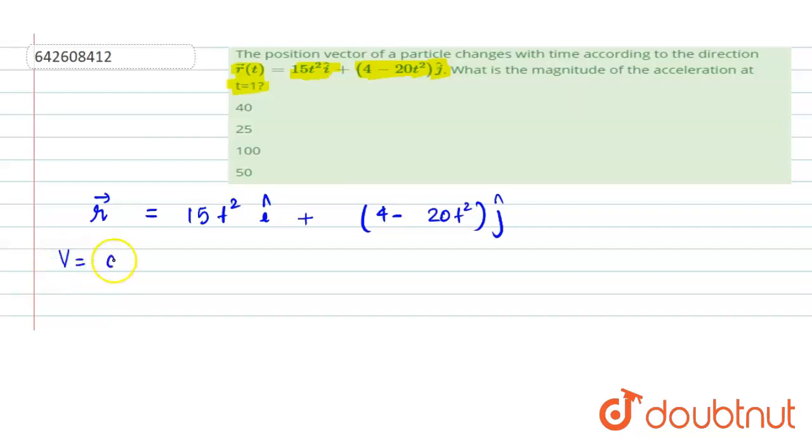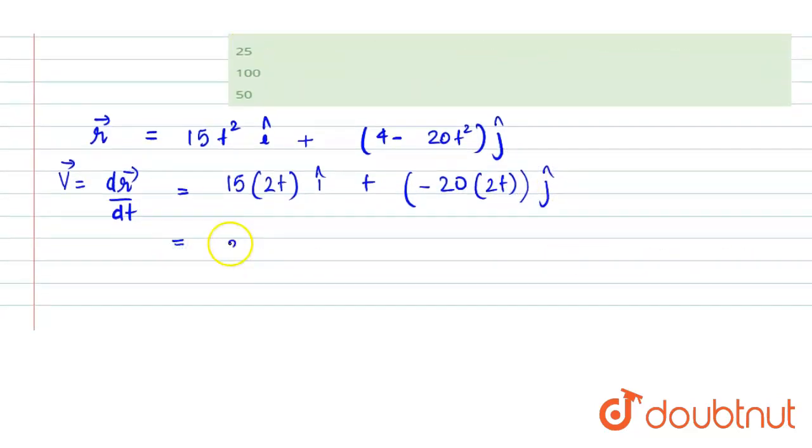Now we know the velocity vector is given by dr vector by dt. We have to differentiate position vector with respect to time in order to get the velocity as a function of time. That would be 15, differential of t square is 2t in i cap, plus since 4 is a constant, minus 20, differential of t square is again 2t in j cap. So that becomes 30 t i cap minus 40 t j cap.